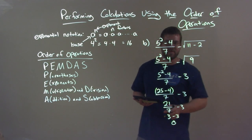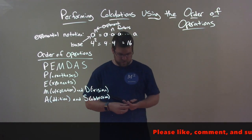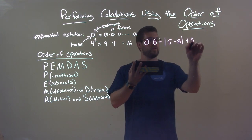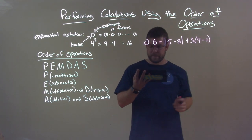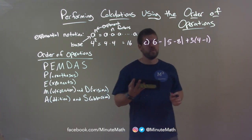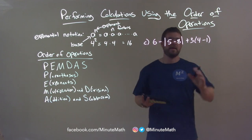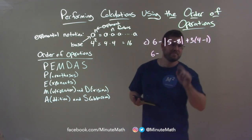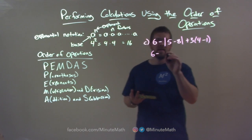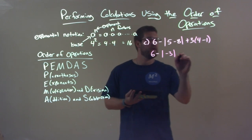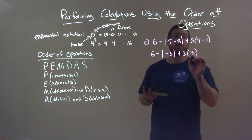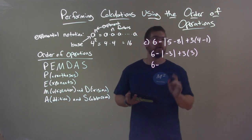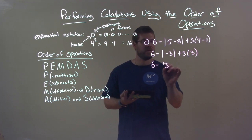Let me know in the comments if you got that. Next example: 6 minus the absolute value of (5 minus 8) plus 3 times (4 minus 1). Now, the absolute value is like a parenthesis — same hierarchy. So we treat that first. Inside: 5 minus 8 is negative 3; inside the other parentheses: 4 minus 1 is 3. The absolute value of negative 3 is positive 3 — remember, it's a distance from 0.